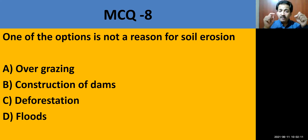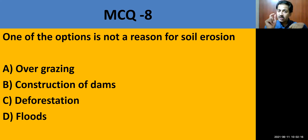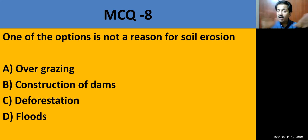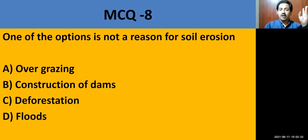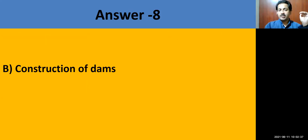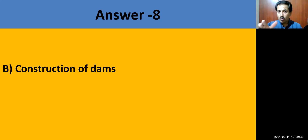MCQ question number 8: One of the given options is NOT a reason for soil erosion. Options: overgrazing, construction of dams, deforestation, or floods. The correct answer is construction of dams. The rest are reasons for soil erosion. Due to construction of dams, water is held in the reservoir, so soil erosion is avoided.